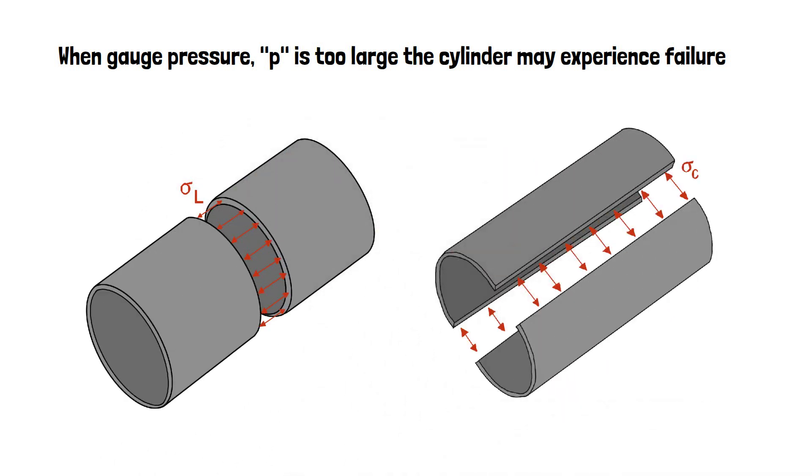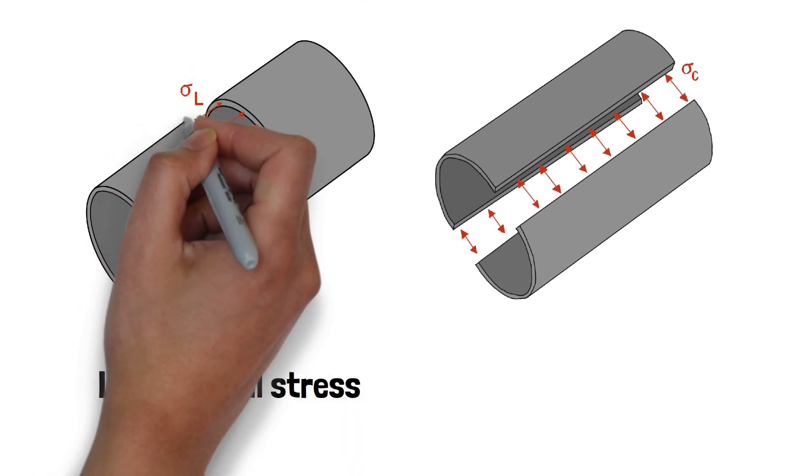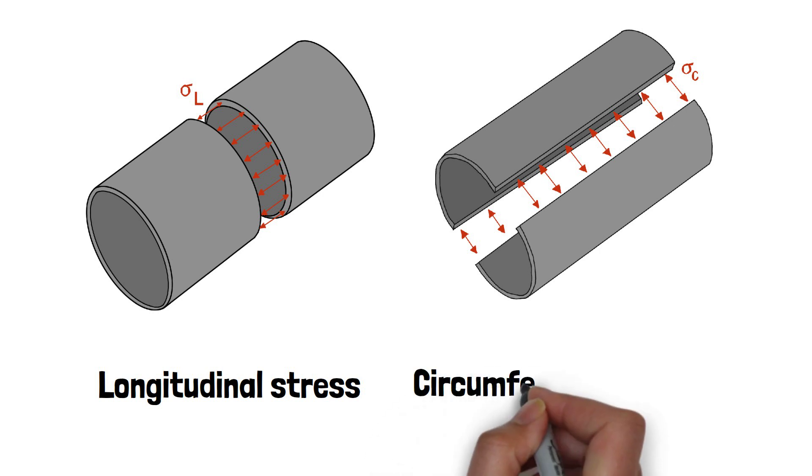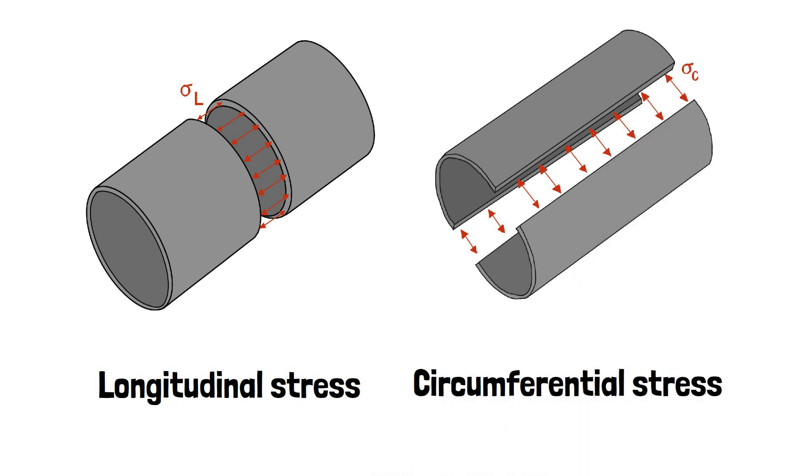Here we have two types of stress at play. The stress in the longitudinal direction is denoted as sigma L and the stress in the circumferential direction is denoted as sigma C. The longitudinal stress is also known as the axial stress, while the circumferential stress is also known as the tangential or hoop stress.